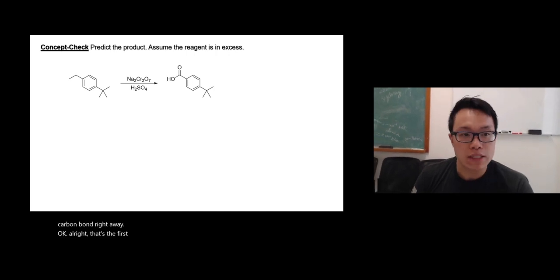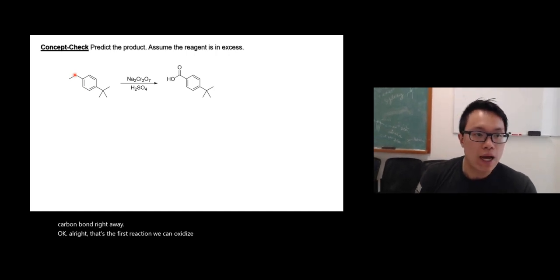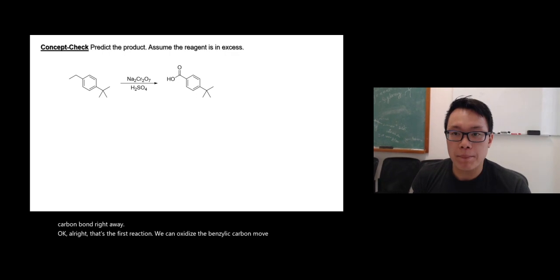That's the first reaction. We can oxidize the benzylic carbon. Move on to the next one we call benzylic bromination.